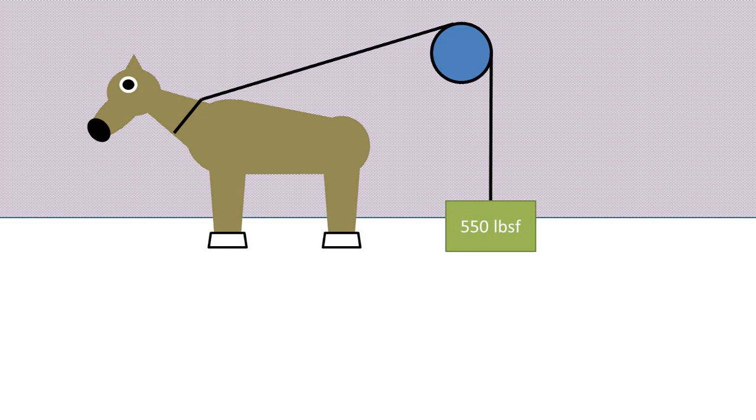In this video we'll be going over the definition of horsepower in imperial and how to calculate the horsepower of a rotating shaft. To begin, I have a diagram of a horse that has a cable attached to it that goes over a pulley.